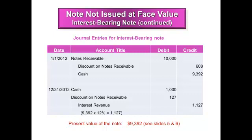On January 1, 2012, you received a notes receivable for $10,000. Someone gave you that note; you acknowledge the note. You increase on the left-hand side — debit notes receivable $10,000. On the right-hand side, you acknowledge the cash you sacrificed, so you credit cash for $9,392. Then you are short $608. Remember, we are doing double-entry accounting — your left is always supposed to equal right. Therefore, you put a plug-in number of $608 on the right, which you call discount on notes receivable.